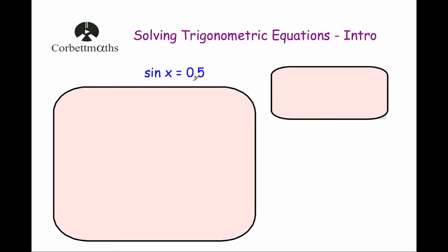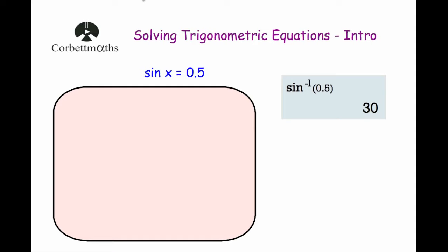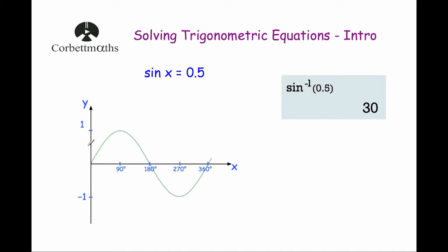So first of all, we're going to look at the trig equation sine x equals 0.5. You may know from exact trig values that sine of 30 is equal to 0.5, or if you didn't know off by heart, you could do it on your calculator — do the inverse sine of 0.5 and you would get 30 degrees. Now if we look at the sine graph, 30 degrees wouldn't be the only solution. There might be multiple answers and we have to make sure that we get all of them. To do that, we're going to use the CAST Diagram.